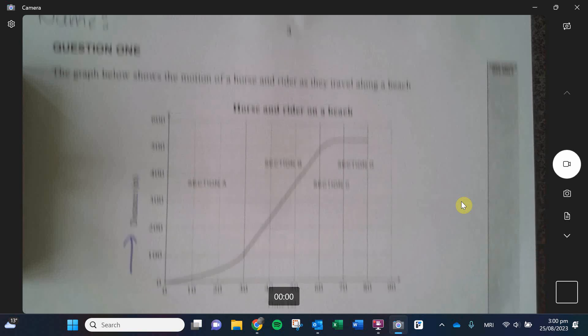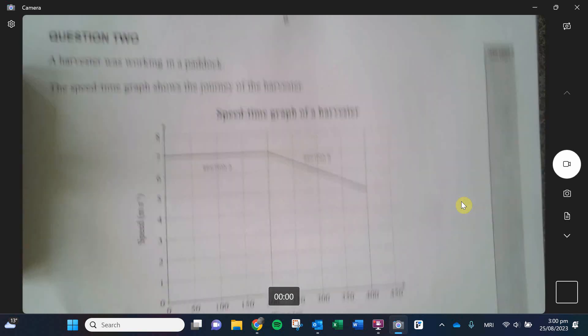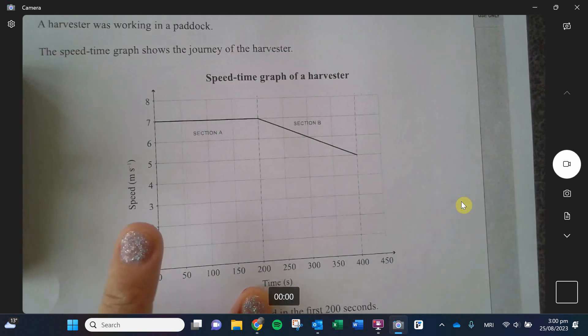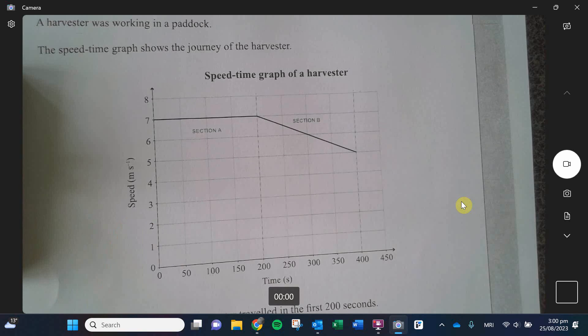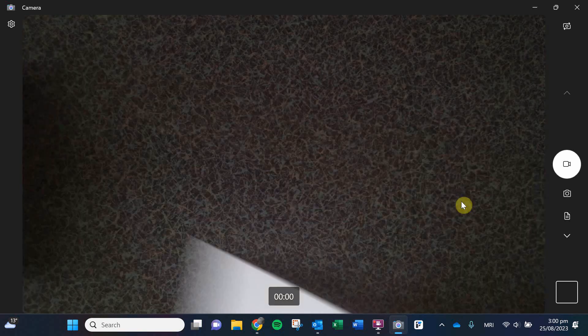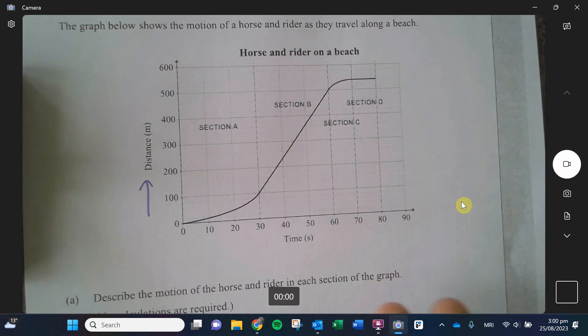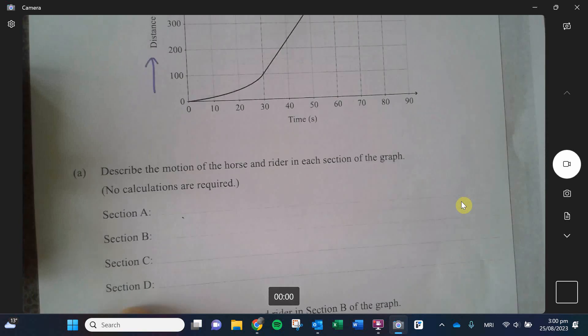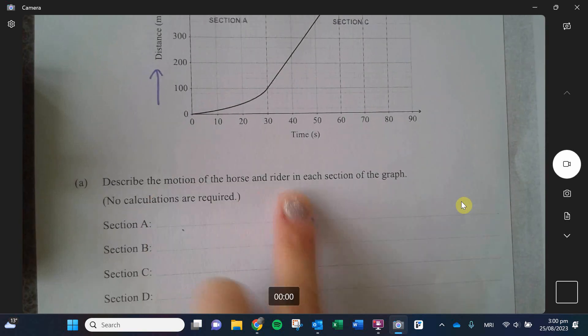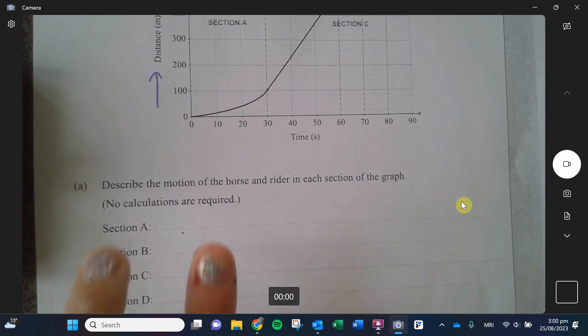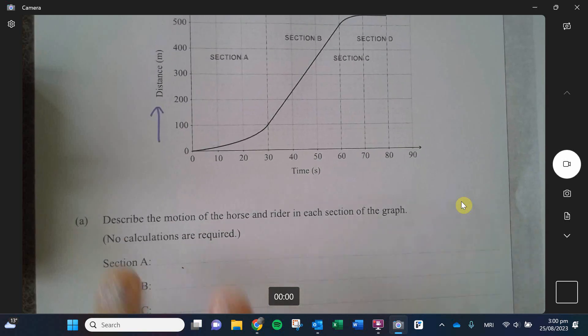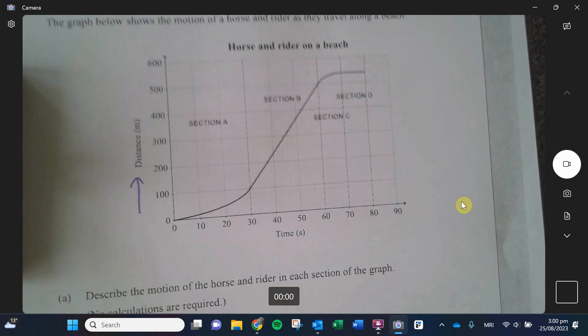In fact, I think the question I put on the back graph is an example of a speed time graph. So again, changes our meaning. First thing here is that they want us to describe the motion of the horse and the rider in each section. There is no calculations required. So all they're asking you to do is identify.